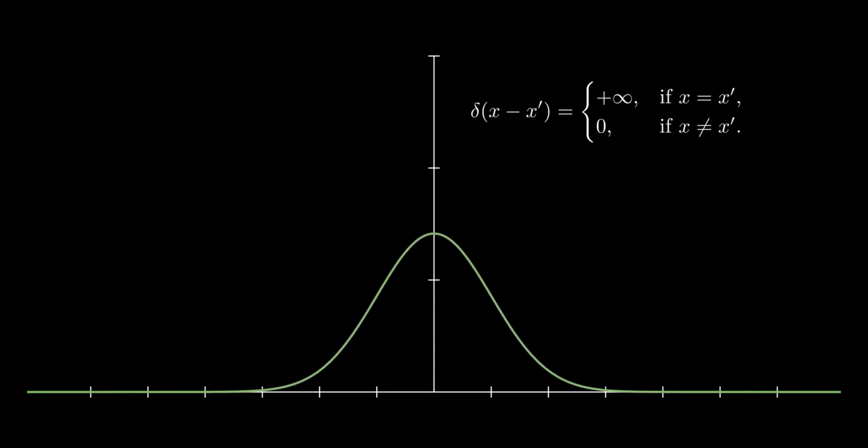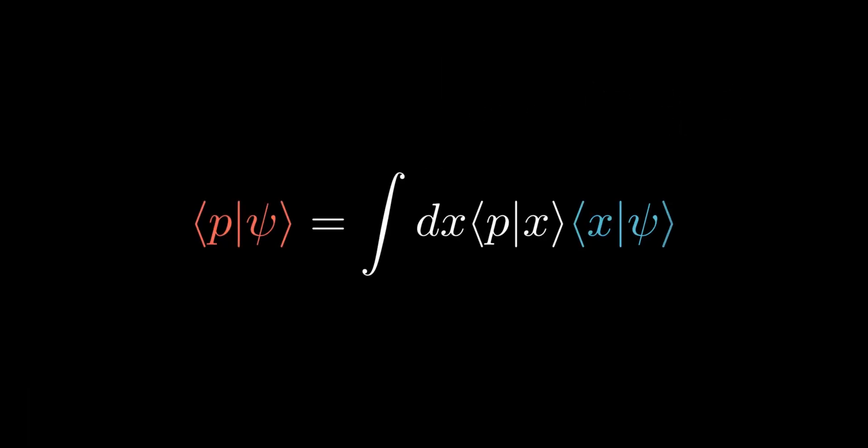It is physically impossible to have a measuring instrument of infinitely high precision. So let us now consider a more realistic case. We want to consider a more general relationship between the position and momentum basis wave functions. Where ket psi can be any arbitrary state, we begin by inserting the identity operator in position basis. Then use the results we derived earlier to swap out bra p ket x.